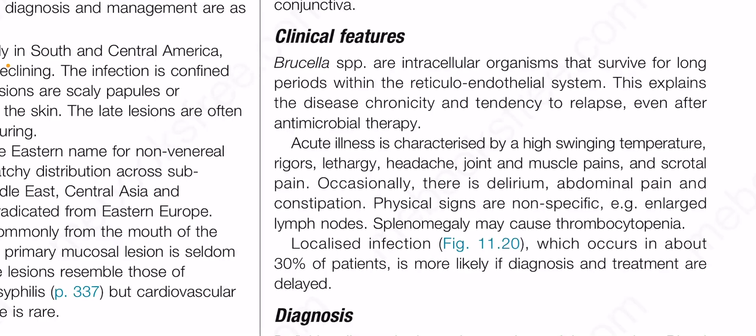Brucella species are intracellular organisms that survive for long periods within the reticuloendothelial system. This explains the disease chronicity and tendency to relapse even after antimicrobial therapy. Acute illness is characterized by a high swinging temperature, rigors, lethargy, headache, joint and muscle pains, and scrotal pain.